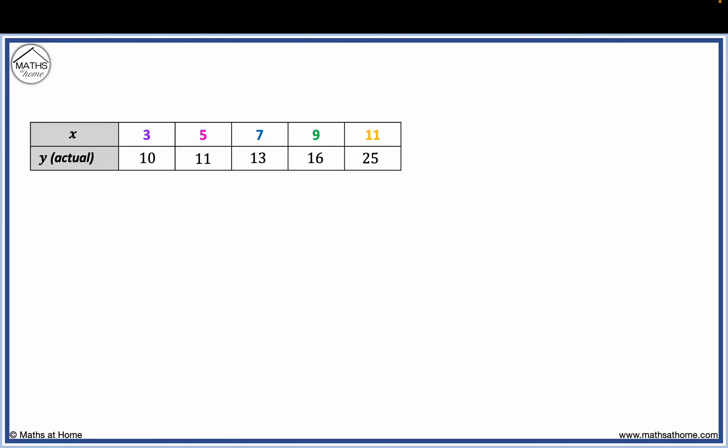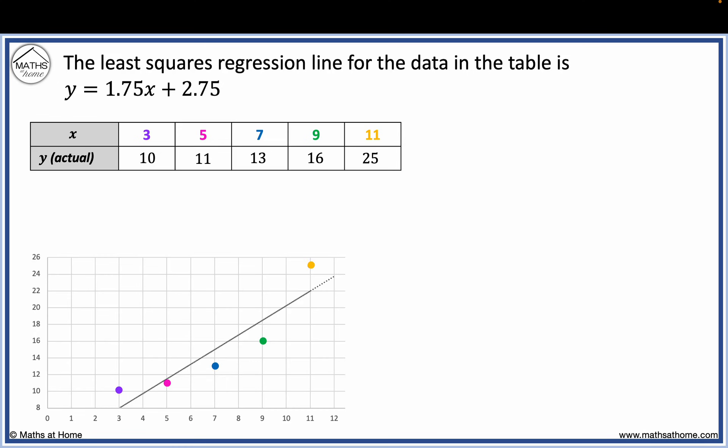Here is another set of data. The least squares regression line for this data is y equals 1.75x plus 2.75. Here is the scatter plot with this regression line shown.